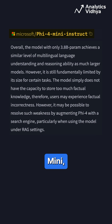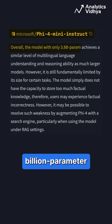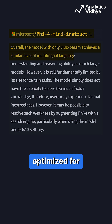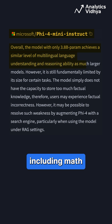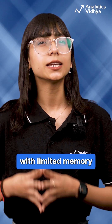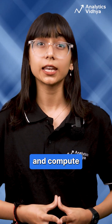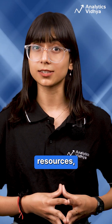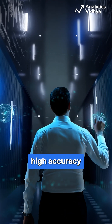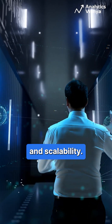Accompanying this release is Phi-5.4 Mini, a 3.8 billion parameter model optimized for text-based tasks, including math and coding. Designed for environments with limited memory and compute resources, Phi-5.4 Mini offers high accuracy and scalability.